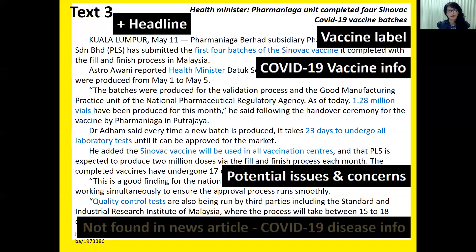Text Three. I found a positive headline classification — meaning it is pro-vaccine. The label used here is Sinovac COVID-19 vaccine. There is also COVID-19 vaccine information — again, the shipment information and where it will be used in the country. Potential issues and concerns: yes, there is certain concern that the approval process may not run smoothly and concern about quality control tests. But I did not find COVID-19 disease information in this article from the Malay Mail.